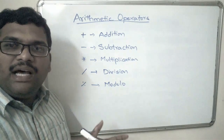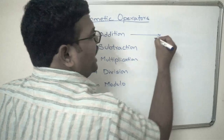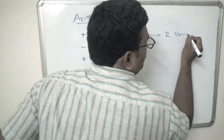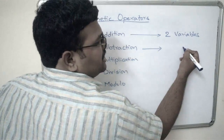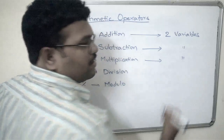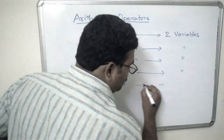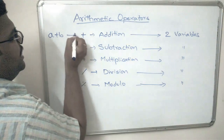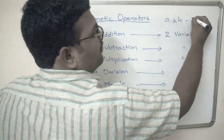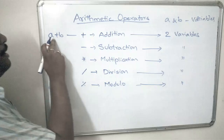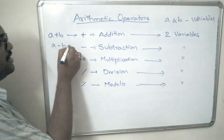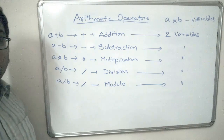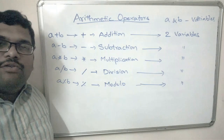These operators are used to perform arithmetic operations. Addition requires a minimum of two variables; subtraction requires two variables; multiplication requires two variables; division requires two variables; and modulo also requires two variables. That means if a and b are different variables: a plus b, a minus b, a star b, a divided by b, and a modulo b. These are the five operators.